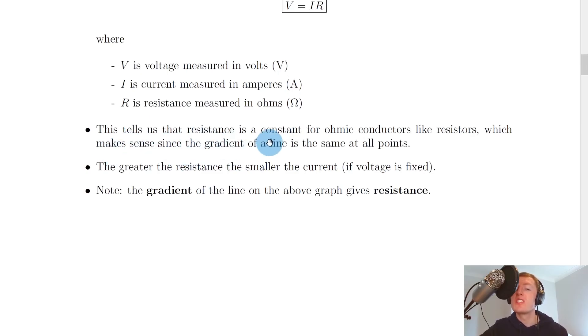This tells us that resistance is a constant for ohmic conductors like resistors, which makes sense since the gradient of a line is the same at all points.